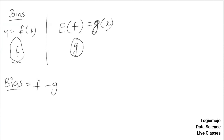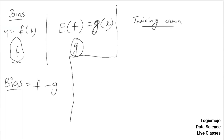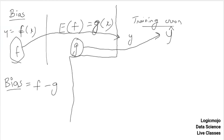In simple terms, bias is how different our model is from the actual model. We never have to calculate it directly — but how can we, since we don't know f? Bias is how far we are from the original truth. Since the target variable y reflects the actual formula f, and y-hat reflects the estimated formula g, bias equals f minus g, which equals y minus y-hat — that's the training loss.